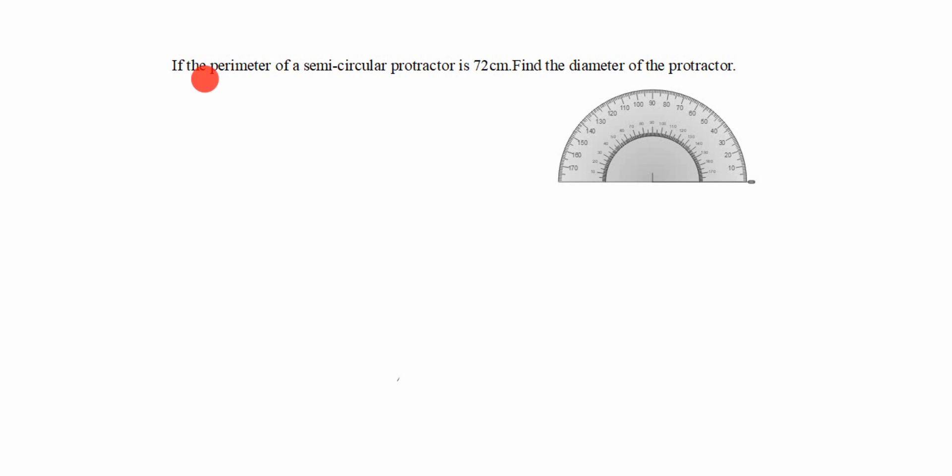Hi friends, welcome to my channel Excellent Ideas in Education. Today we are going to learn about an important board exam problem. If the perimeter of a semicircular protractor is 72 centimeters, find the diameter of the protractor.